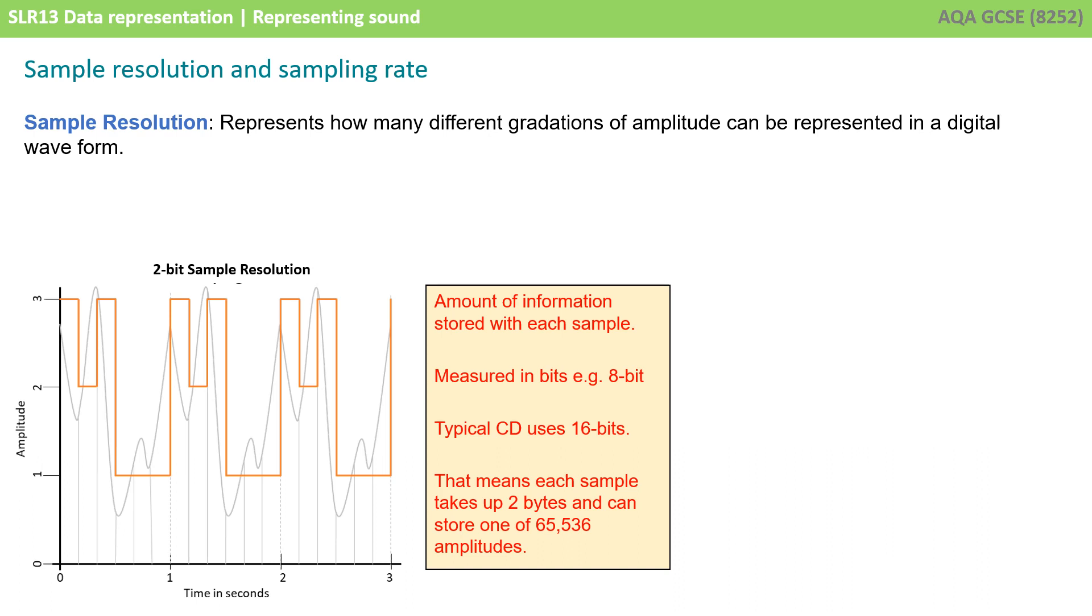On our diagram on the left, we can see our original analog waveform, represented by the grey line. And we have a 2-bit sample resolution. Now, if we're only using 2 bits, the maximum variations in the difference of sound we can sample is obviously only 4, storing these as 0, 1, 2 or 3. So you can see we get quite a rough digital interpretation of the original analog sound.